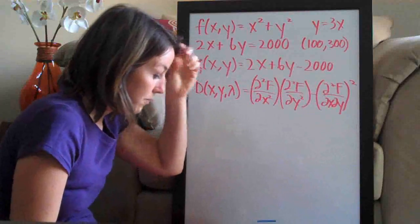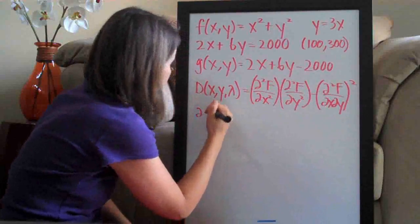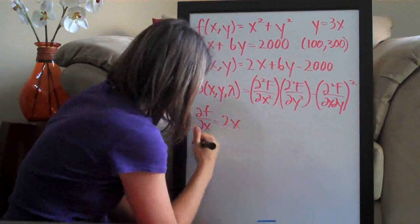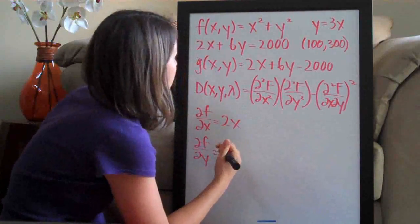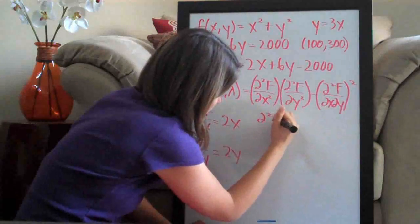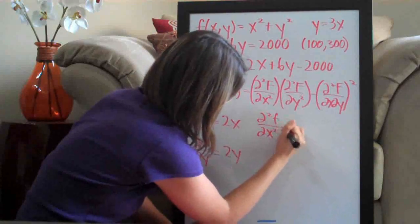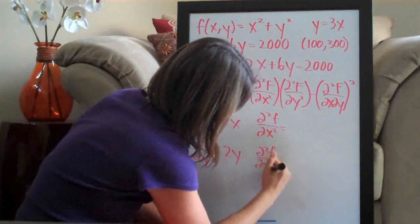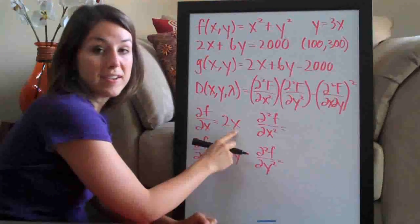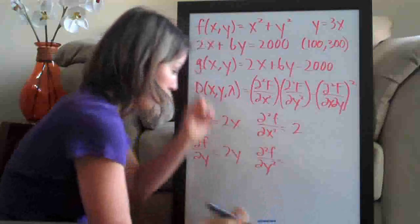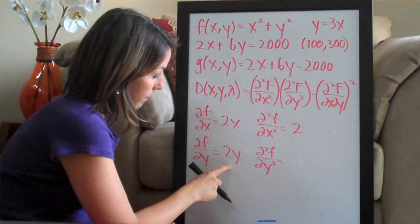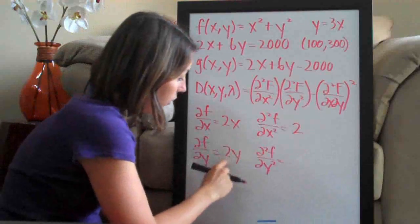We need the second-order partial derivatives. When we took the first-order partial derivatives, we already got 2x with respect to x, and 2y with respect to y. So now we need to take second-order partial derivatives of both of these. The second-order partial derivative with respect to x — written as ∂²f/∂x² — means we take the partial derivative of 2x with respect to x again, which gives us 2. Then the second-order partial derivative with respect to y means we take the partial derivative of 2y with respect to y again, which also gives 2.